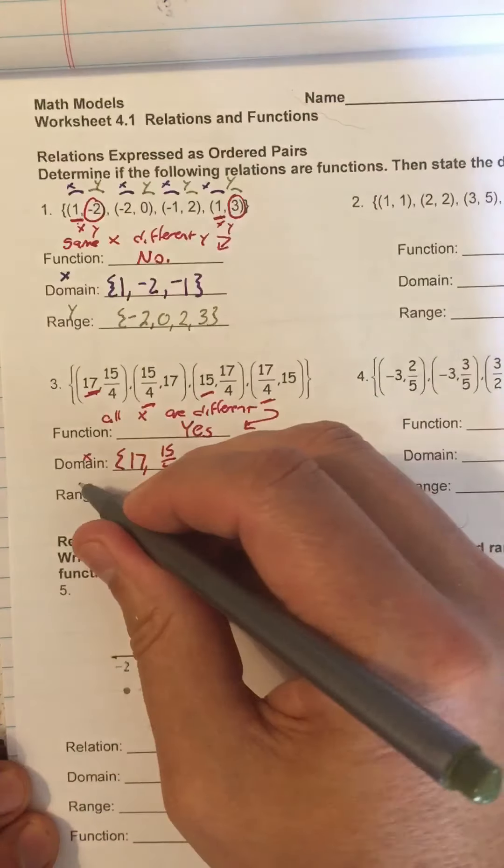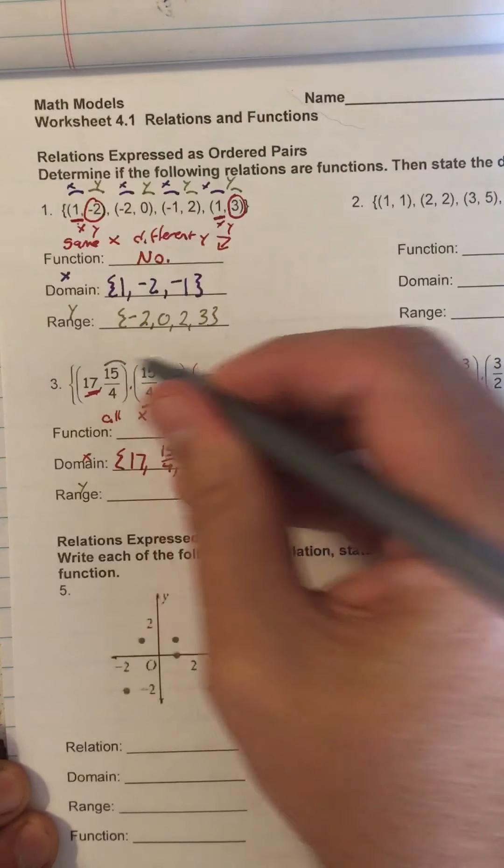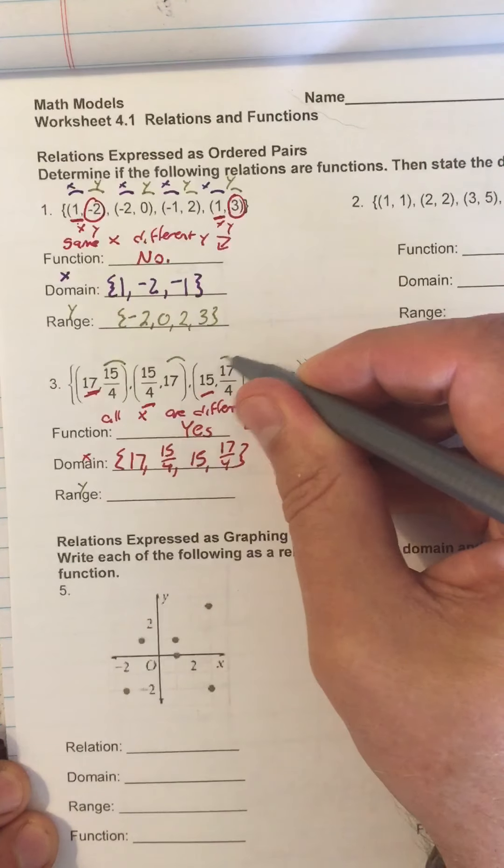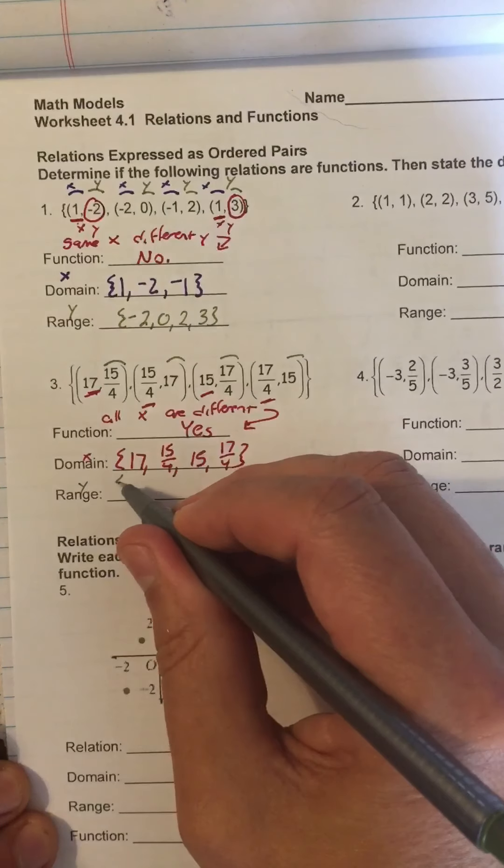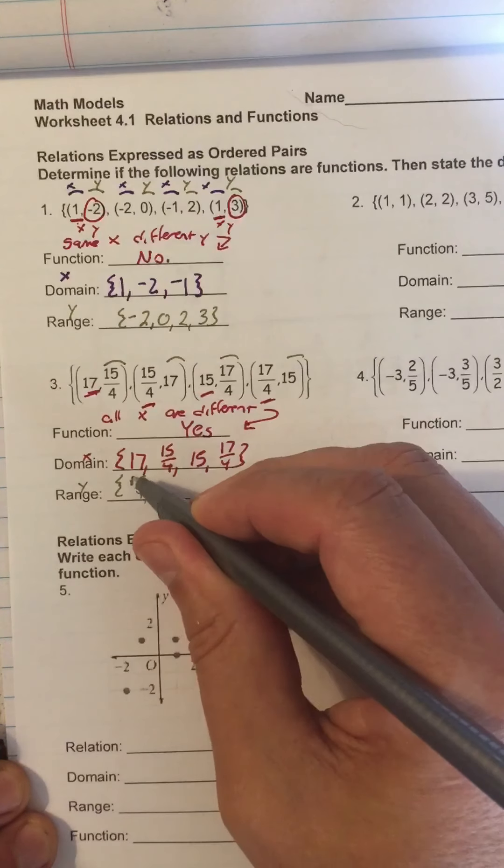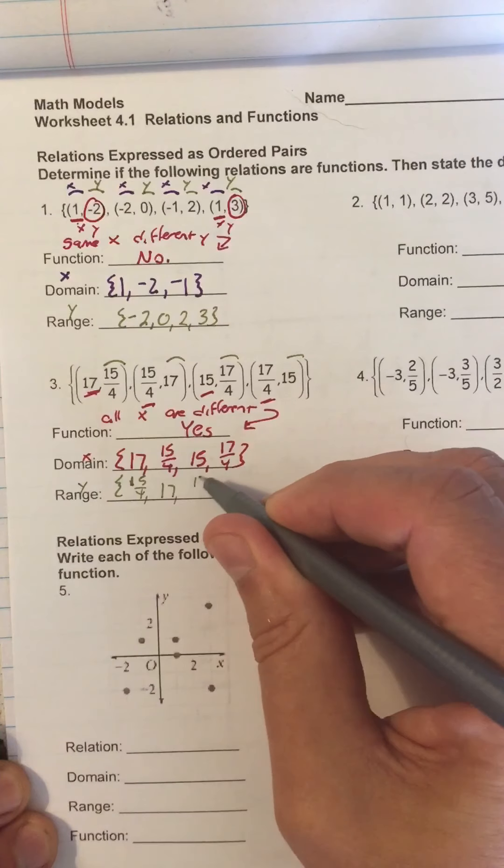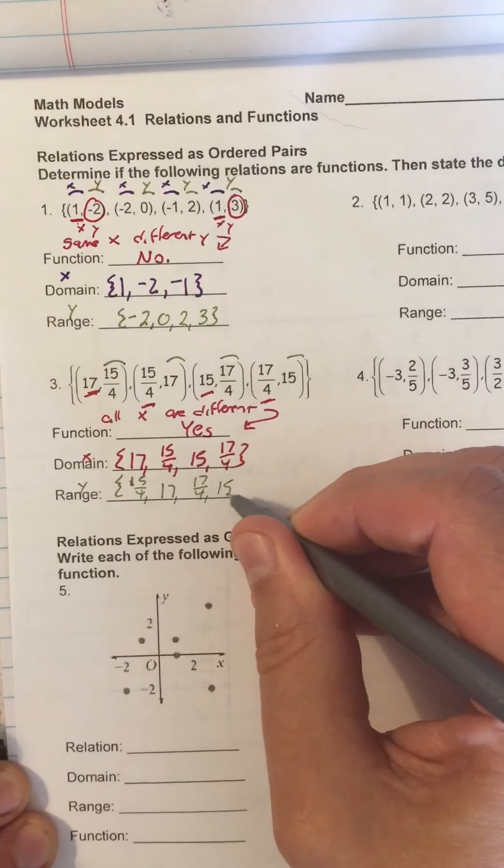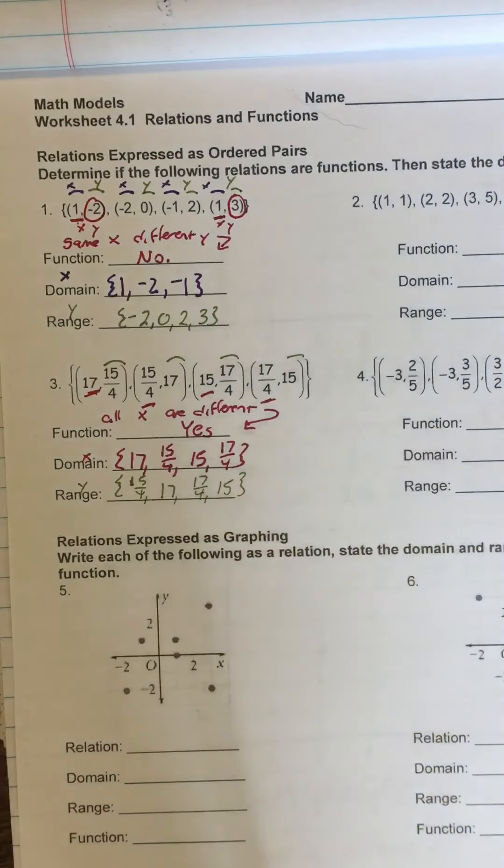What is the range? The range is all the y's. So that's 15 fourths, 17, 17 fourths, and 15. So 15 fourths, 17, 17 fourths, and 15. That's the domain, that's the range.